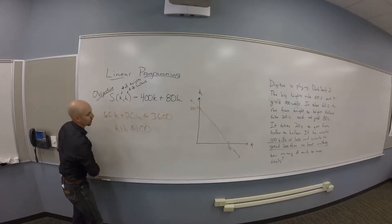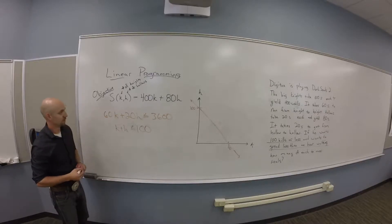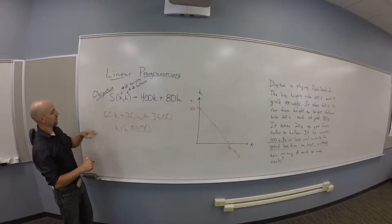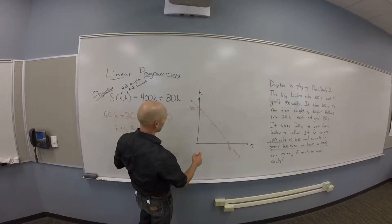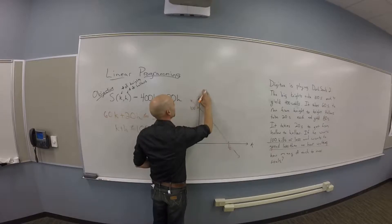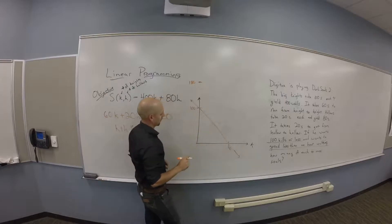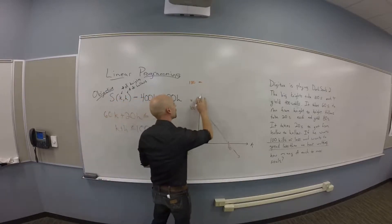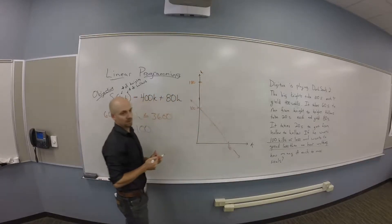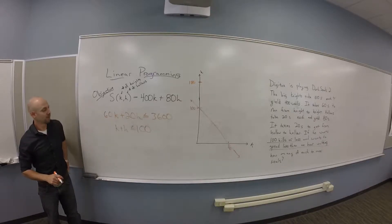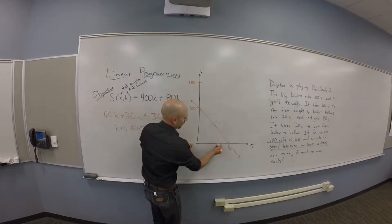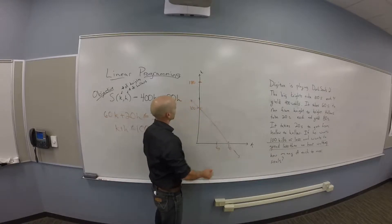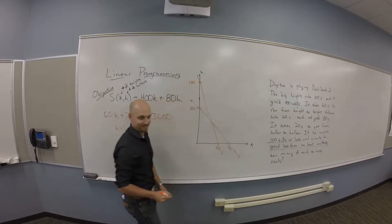How about the orange one? How do you get the orange one on here? Find the intercepts. I think maybe finding the intercepts is easiest. If k is 0, h is 180. That's up here some place. And where's the other one? When h is 0, k is 60. So I got my line like this now.